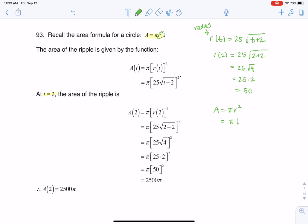Right? And then if we do 50 squared, that's 2,500, so my answer is 2,500 pi. And that's what you see me doing over here.